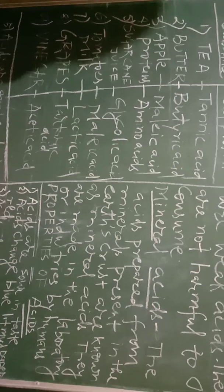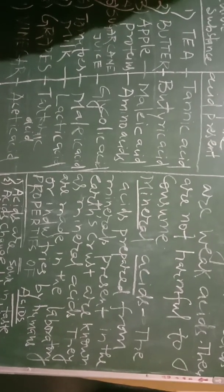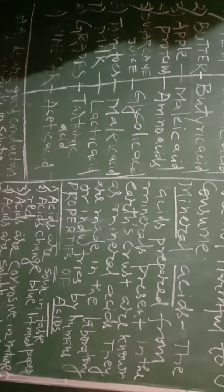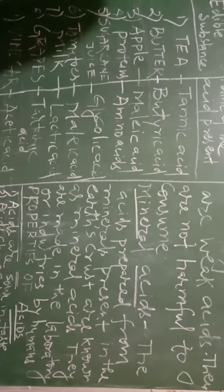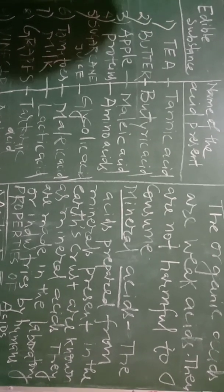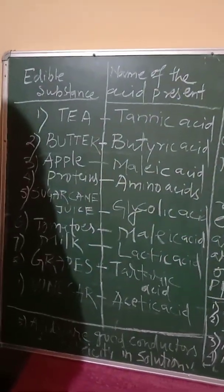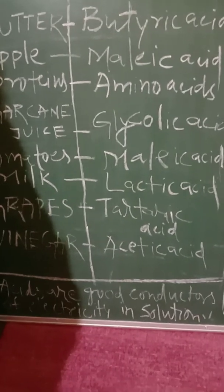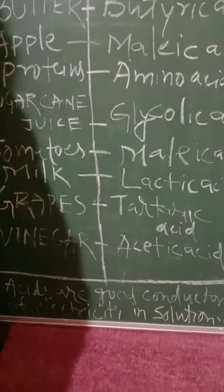Concentrated acid is formed when a large amount of acid is added to a small amount of water. Dilute acid is formed when a small amount of acid is added to a large amount of water. Then it is called a dilute acid.